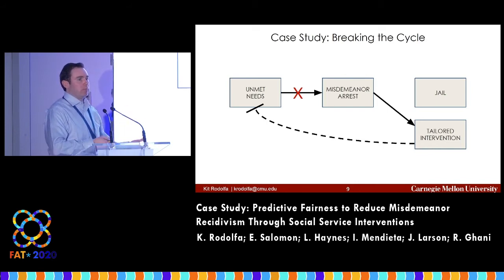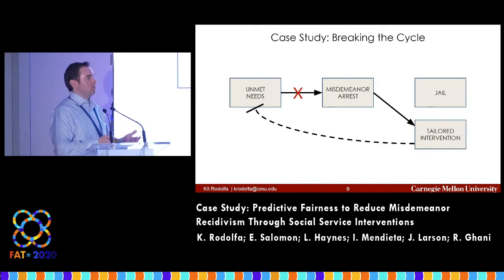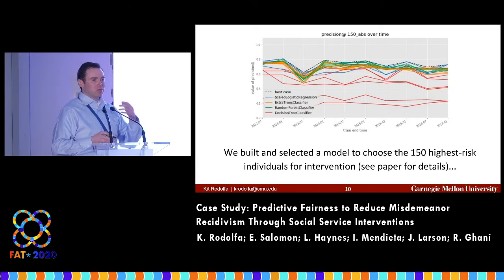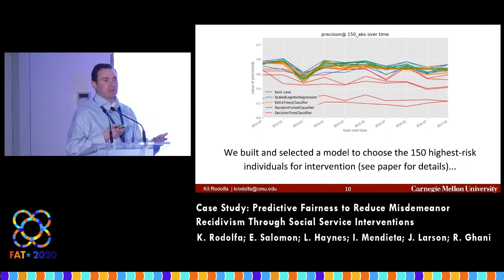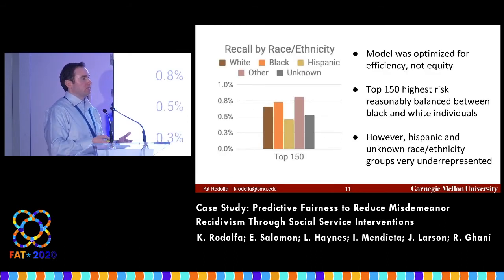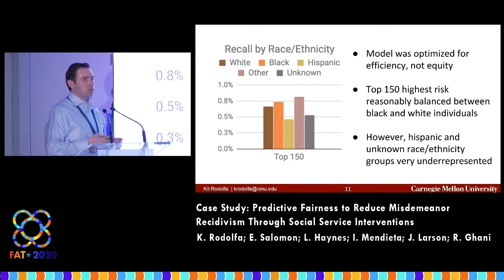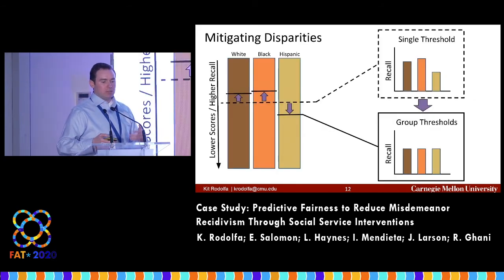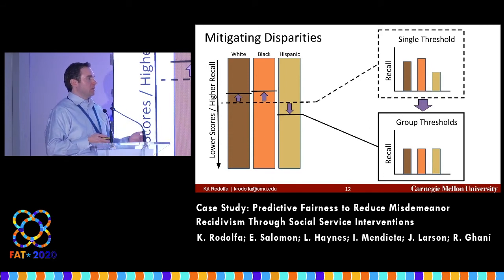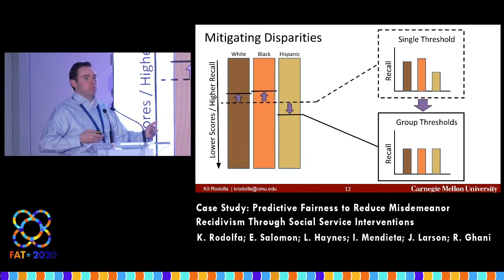They worked with us on a predictive modeling problem: identifying 150 individuals over the next six months for whom they could develop interventions. The modeling details are in the paper; here I focus on the fairness and bias aspects. We built the model, selected it based on efficiency — precision at the top 150 — then examined its equity implications using the recall-based metric across racial and ethnic subgroups, finding considerable underrepresentation of Hispanics and individuals with unknown race and ethnicity. To address this, we applied a post-hoc analysis with different thresholds across subgroups to better achieve equitable goals while balancing efficiency.